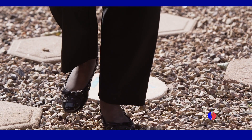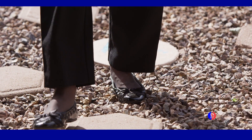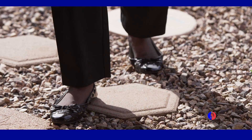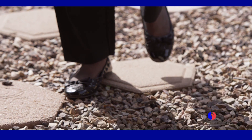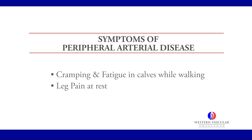Early on with the disease, patients can find themselves walking a block or two and suddenly develop cramping or fatigue in their calves to a point where they have to stop and rest. Then the pain goes away, and when they try to walk another block or two the symptoms recur. This usually indicates the early onset of peripheral vascular disease.